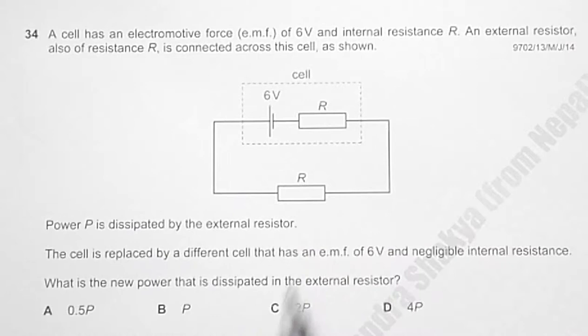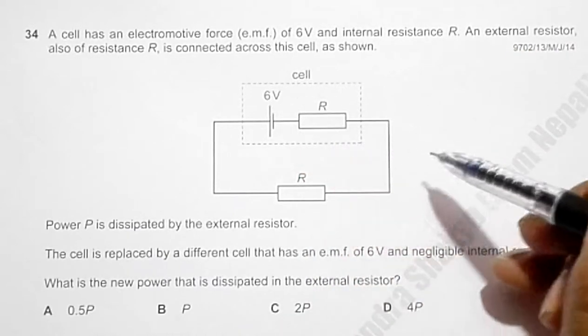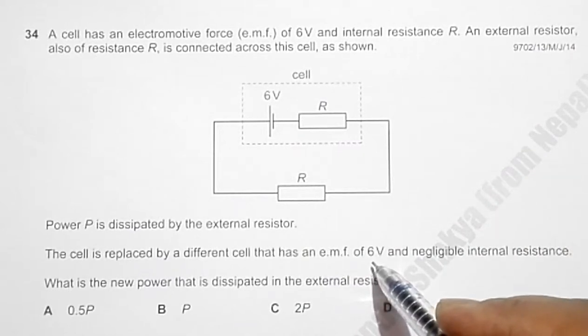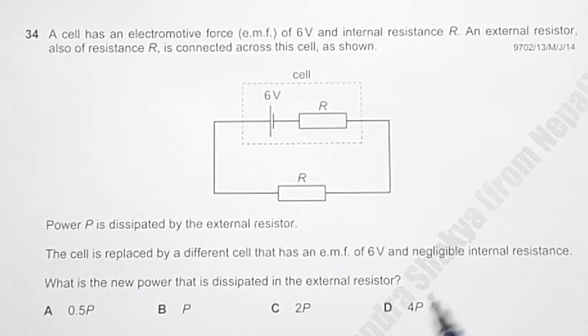Now it says that this cell has to be replaced by another cell which has the same PD, same EMF, but negligible internal resistance. So now we have to find the new power that is dissipated in the external resistor.